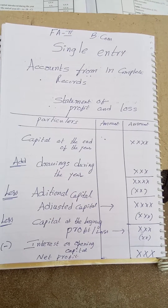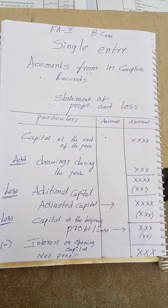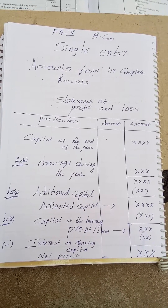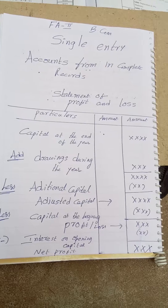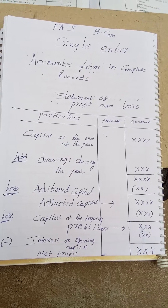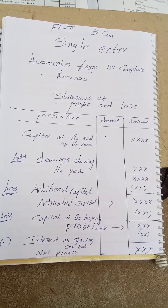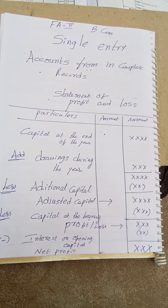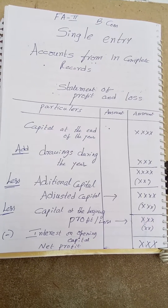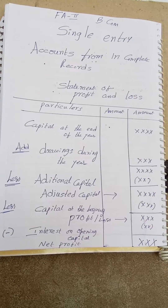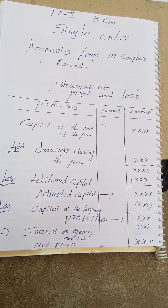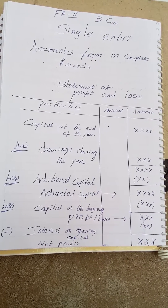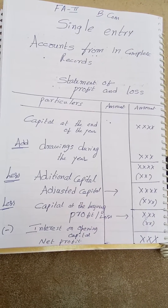My dear students, in FA2, we have a topic like single entry. Any accounting system which is not a double entry bookkeeping system is known as a single entry system. Most of the small business firms are still maintaining the same system of single entry.